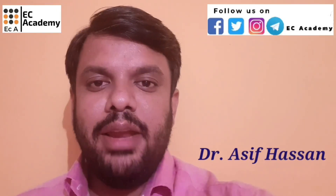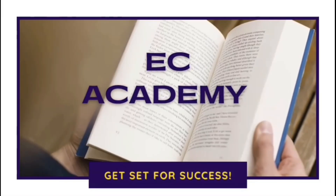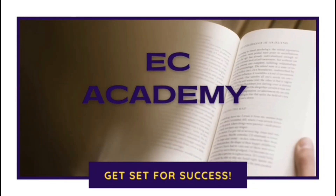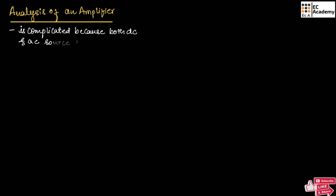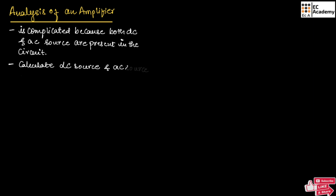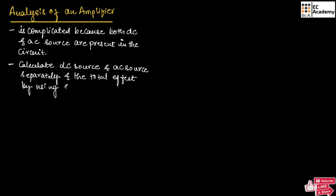Hello friends, welcome to EC Academy. In this lecture, let us understand the analysis of an amplifier. The analysis of an amplifier is complicated because both DC and AC sources are present in the circuit. Hence, we have to calculate the effect of DC source and AC source separately and find the total effect by using the superposition theorem.